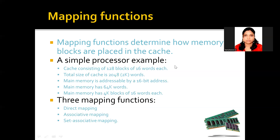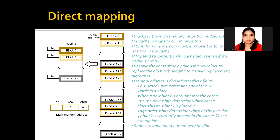Let me explain how direct mapping works. To map a data from the main memory to the cache memory, take for example block number 127. In direct mapping, we use the formula: block j of the main memory will be mapped to j mod the size of the cache — in this case, j mod 128. In that resulting location, the particular data will be stored.